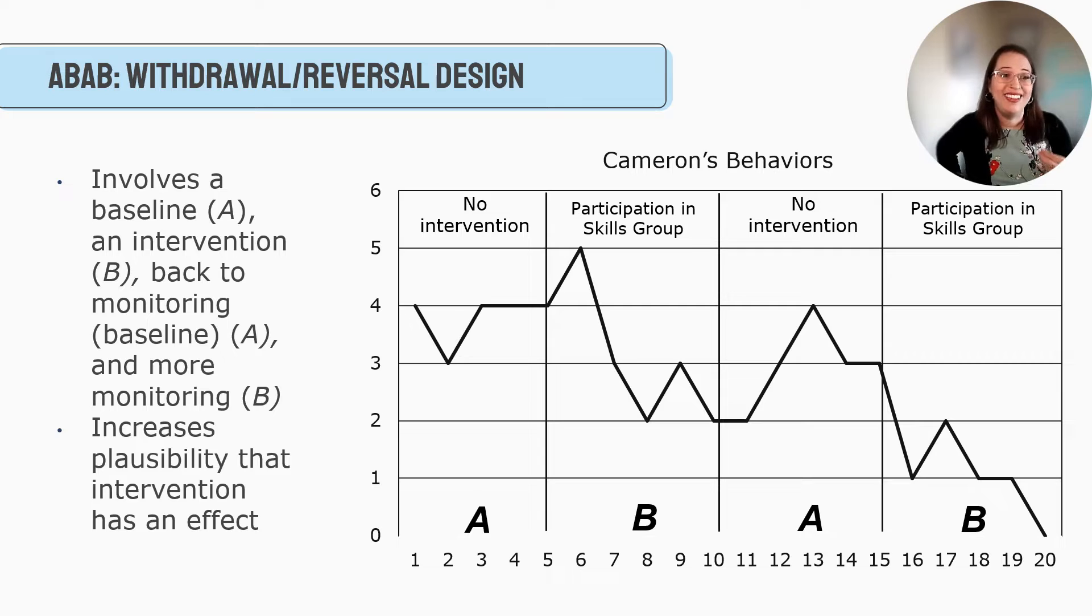So with an ABAB, then what you do is you would withdraw the intervention. So now we're going to take the intervention. He does five weeks in the skills group. And then we say, okay, he's going to hang out in the classroom for five weeks. No more skills group. Well, you can see his behavior starts to increase a bit. And then we say, nope, we're going to put him for the last five weeks back in that skills group. And you can see it start to go down. And so it's really nice because you can show like, hey, without this intervention, my client doesn't do as well, which starts to increase that plausibility that maybe intervention has an effect.